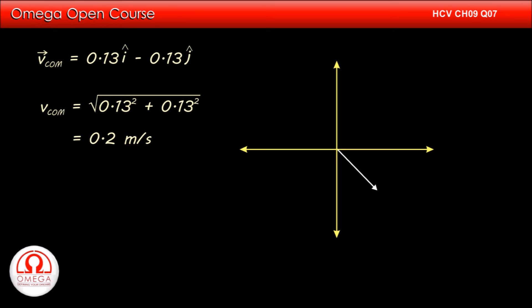Since the horizontal component of the velocity vector is positive and its vertical component is negative, it lies in the fourth quadrant. Also, as the magnitudes of x and y components are equal, the vector makes an angle 45 degrees with the horizontal. Thus, the velocity of the center of mass is 0.2 meters per second in the direction shown. This is our answer.